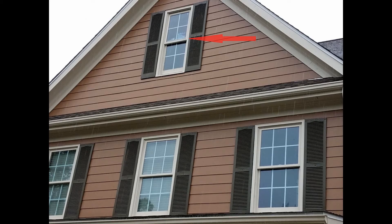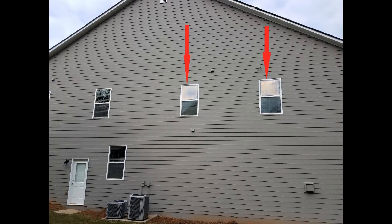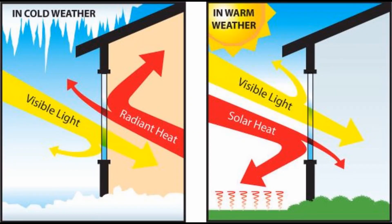Low-E coatings are microscopically thin, transparent coatings adhered to one of the inner surfaces of the window panes. These coatings have been developed to minimize the amount of ultraviolet light and infrared light that can pass through the glass, while not significantly reducing the amount of visible light passing through, keeping our homes bright. Decreasing infrared light energy entering our homes increases our comfort and reduces the heat load on our HVAC systems.